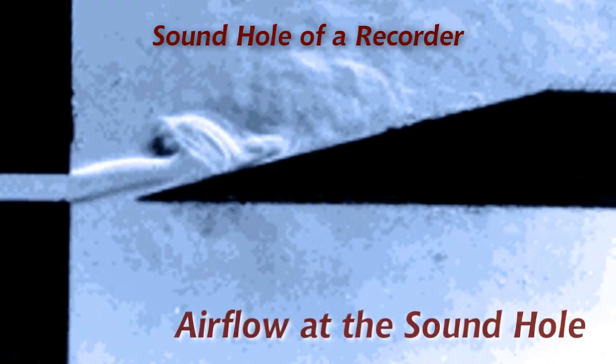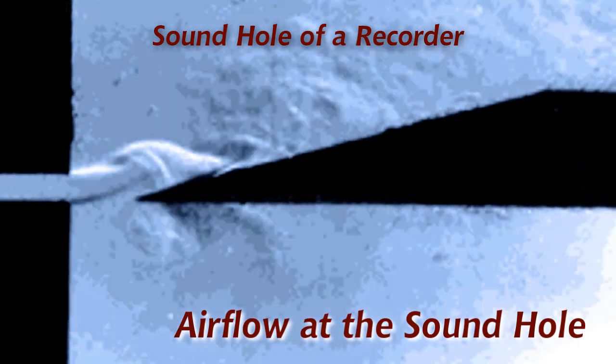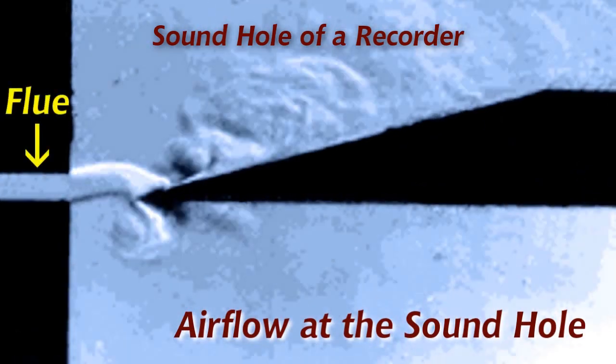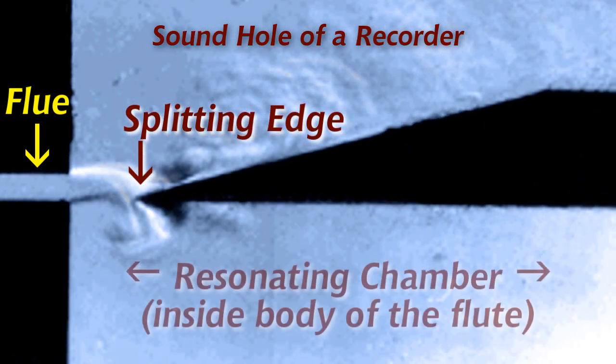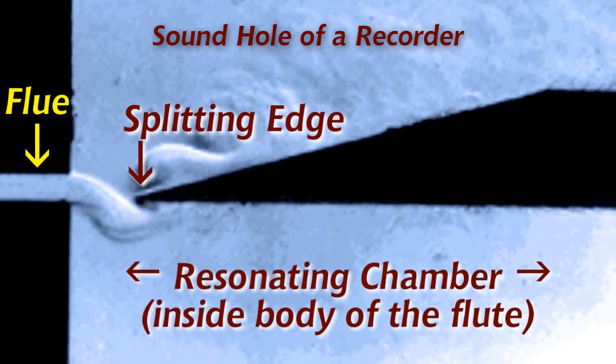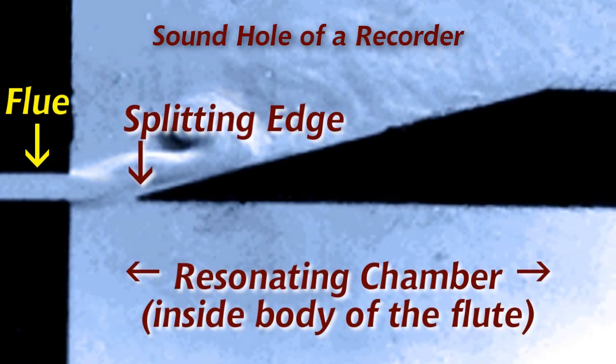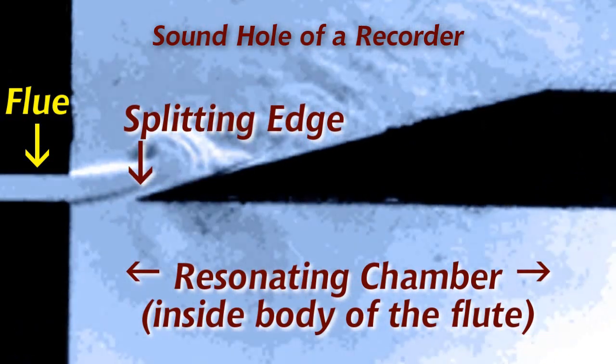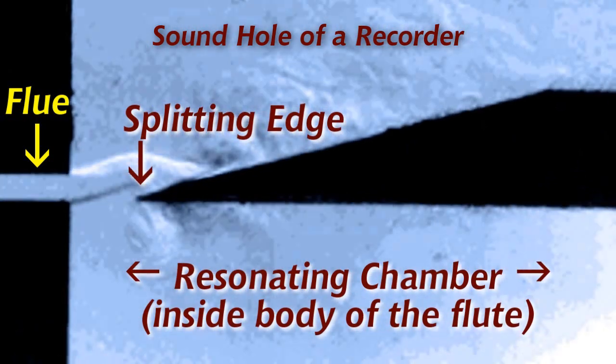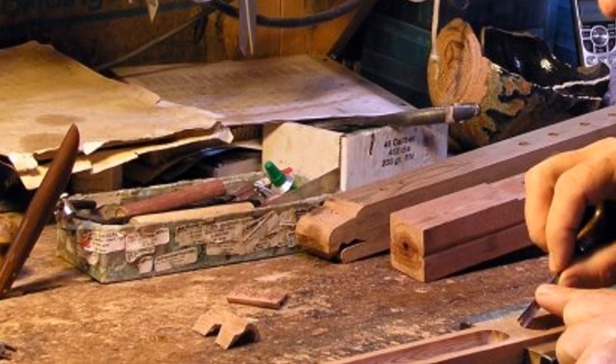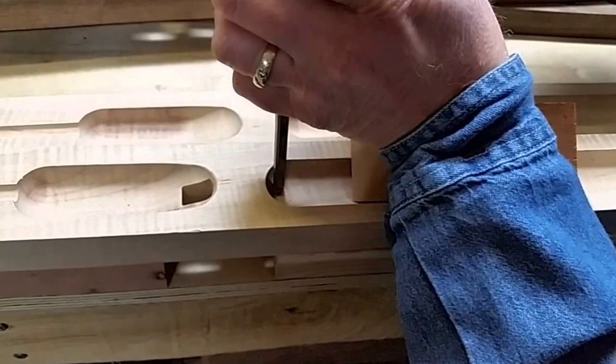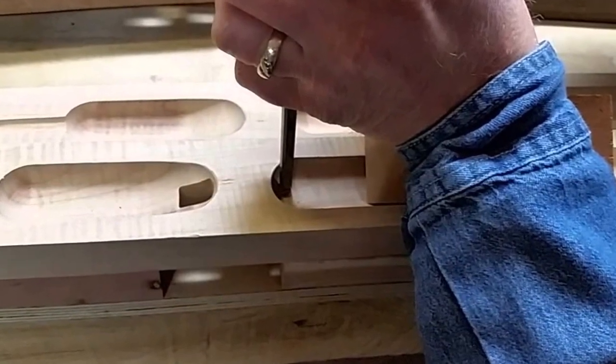Here's a video of the air flow at the sound hole of a flute. We've got air coming out of the flue on the left, crossing the sound hole, and hitting the splitting edge. The body of the flute itself is at the bottom here. The important thing to notice is how the air is oscillating as it hits the splitting edge. This is really where flute makers combine physics, craftsmanship, and their own experience. Their goal is to get just the right air flow and oscillation happening at the sound hole.